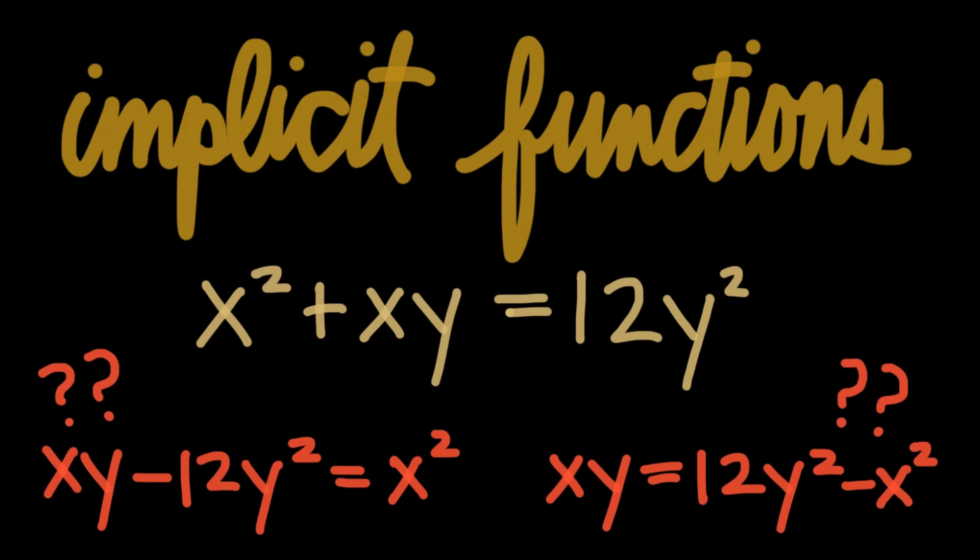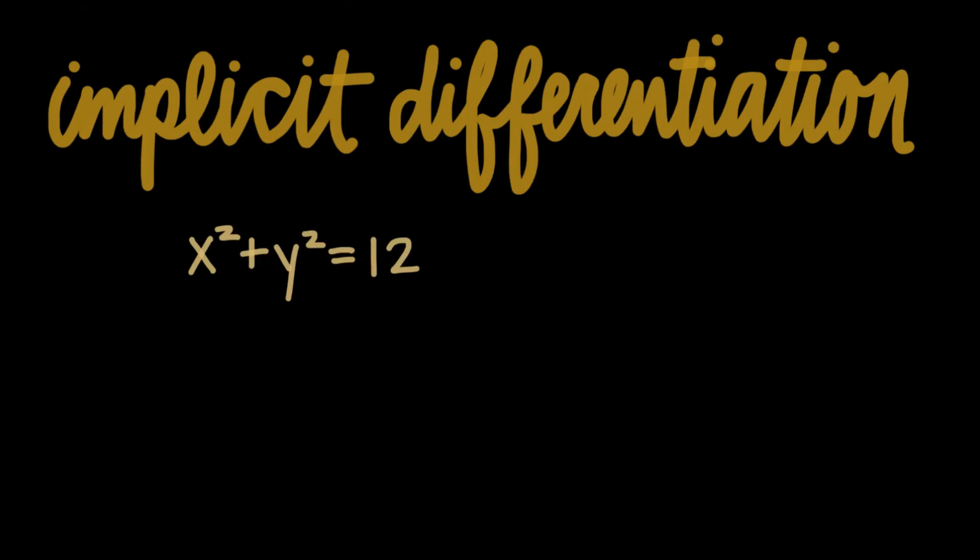This is where implicit differentiation comes into play. Let's go ahead and use it to differentiate this function. The first thing we'll do is take the derivative of both sides with respect to x. Notice that the right side of the equation is a constant, and just like always, the derivative of a constant will always be zero.